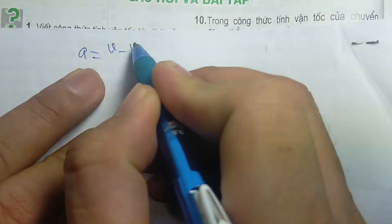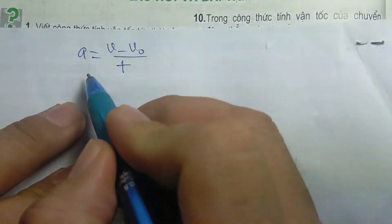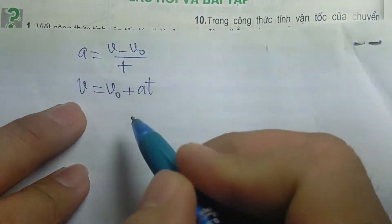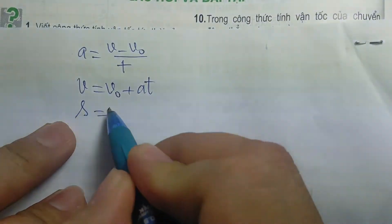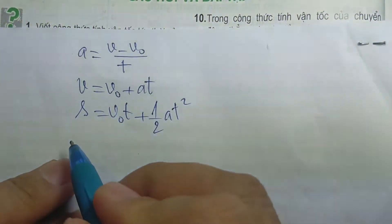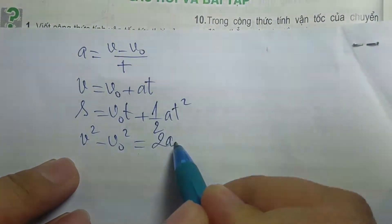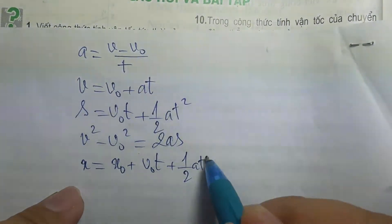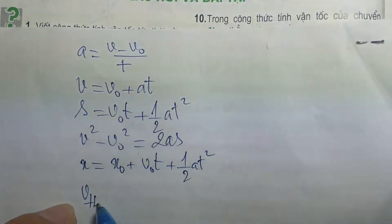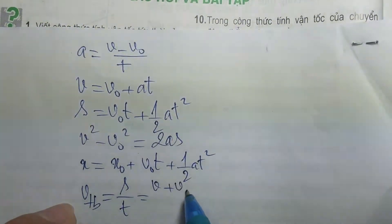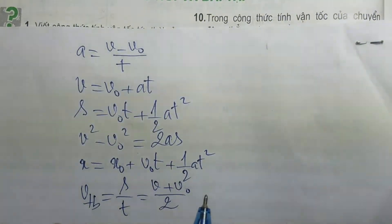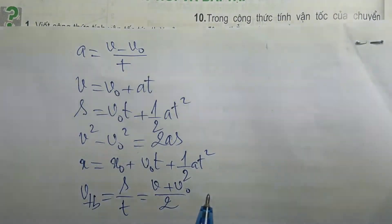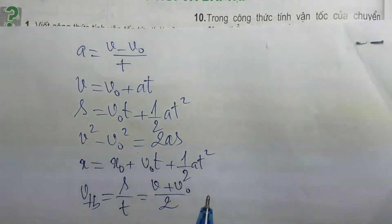Công thức 1: A bằng V trừ V0 chia T. Công thức 2 (phương trình vận tốc): V bằng V0 cộng A nhân T. Công thức 3: S bằng V0T cộng 1 phần 2 A nhân T bình. Công thức 4: V bình trừ V0 bình bằng 2AS. Công thức 5 (phương trình chuyển động): X bằng X0 cộng V0T cộng 1 phần 2 A nhân T bình. Công thức 6: V trung bình bằng quãng đường chia thời gian bằng (V cộng V0) chia 2. Trong chuyển động thẳng biến đổi điều, tốc độ trung bình bằng trung bình cộng vận tốc.